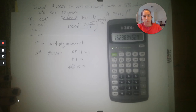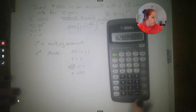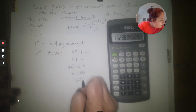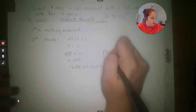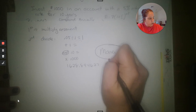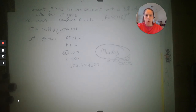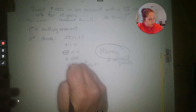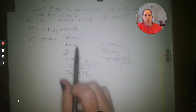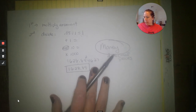Then multiply that by the original amount: times a thousand, equals. I got 1628.894627. This is money, so it always goes to two decimal places — to the nearest cent unless told otherwise. We look at the digit behind the second decimal place — it's a 4, so the answer stays: one thousand six hundred twenty-eight dollars and eighty-nine cents. Starting with a thousand dollars, in ten years we'll have $1,628.89.